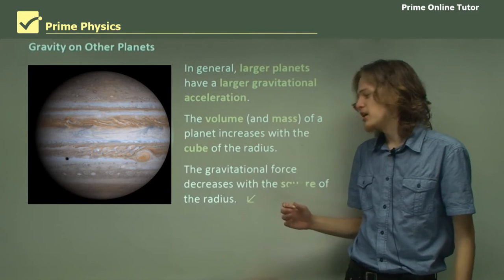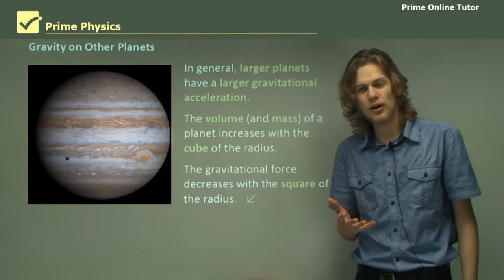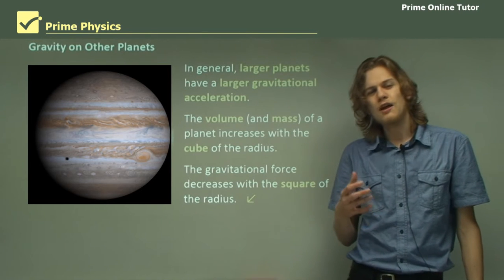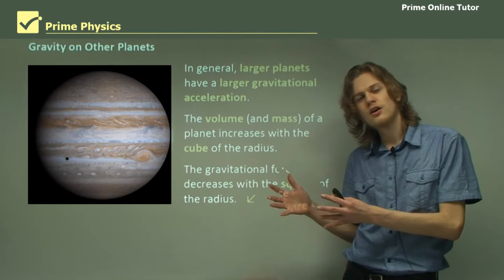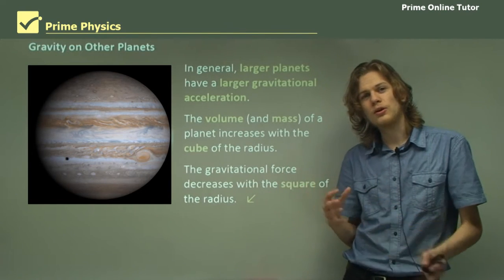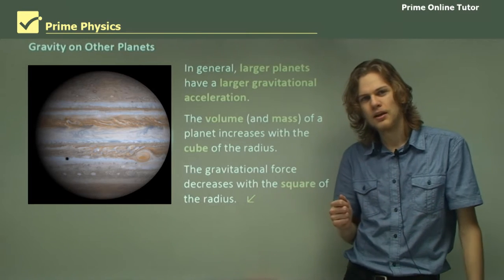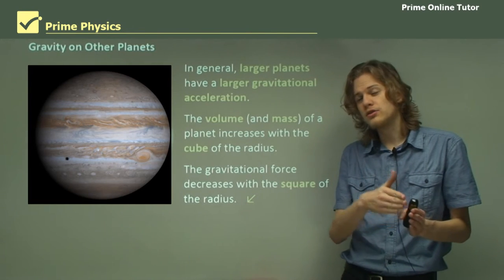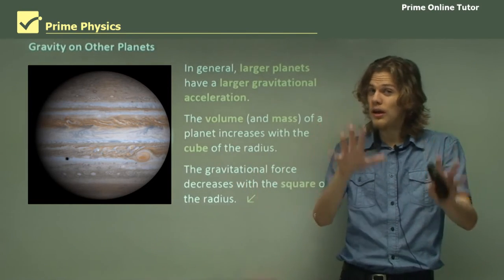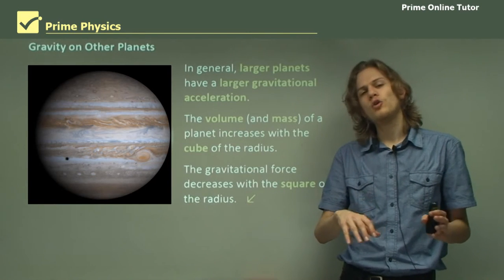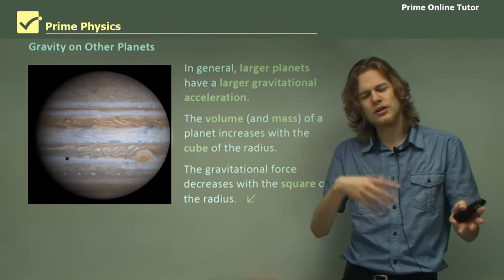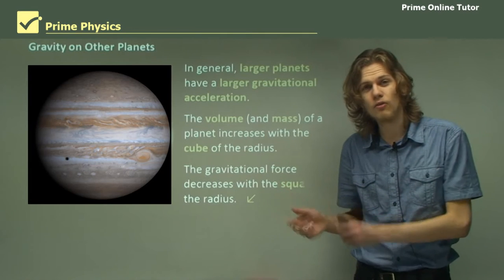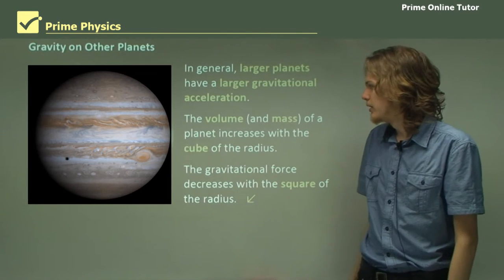On the other hand the gravitational force decreases with the square of the radius. So it means that if you increase by a certain radius your gravity will increase about proportionally. So an object with twice the radius of the Earth assuming it has the same density will have a gravitational field that gives twice the acceleration of the Earth.